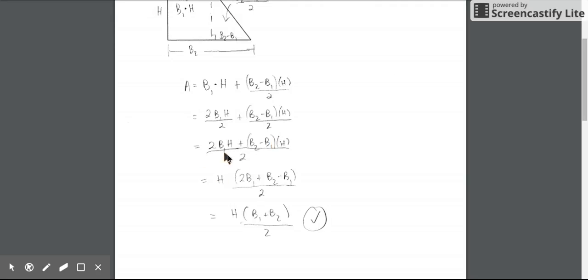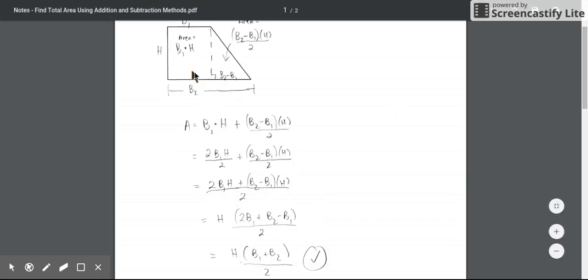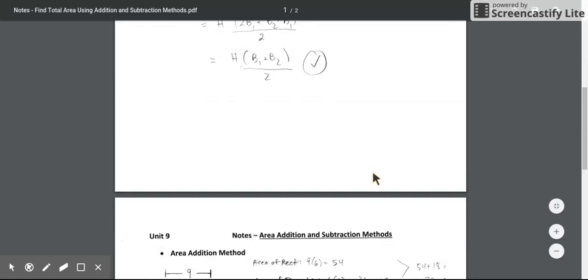When we do that, over here, it leaves behind two times the first base, or b1. Over here, that leaves behind b2 minus b1. Now we can combine some like terms. I have two base 1s. And if I subtract one of those base 1s, I'm left with one base 1. So now we're left with one base 1 and a base 2 times our height divided by 2. And there's the area of the trapezoid, which was created by breaking up that trapezoid into a rectangle and a triangle. So that's the basic idea behind area addition.